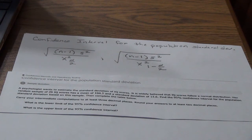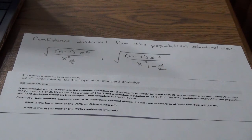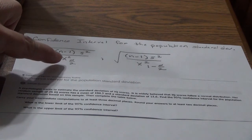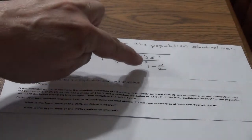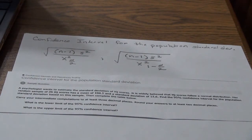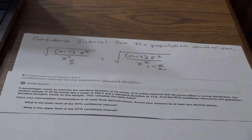The next one is the confidence interval for the population standard deviation, and this one uses two separate formulas. You use alpha divided by 2 and also 1 minus alpha divided by 2 because you're using chi-squared. Unfortunately, this one does not have a graphing calculator option, so you just have to use the formula.